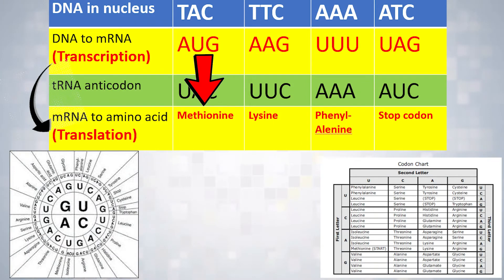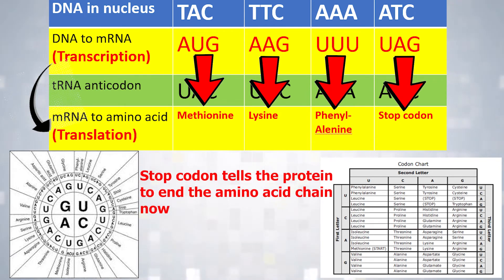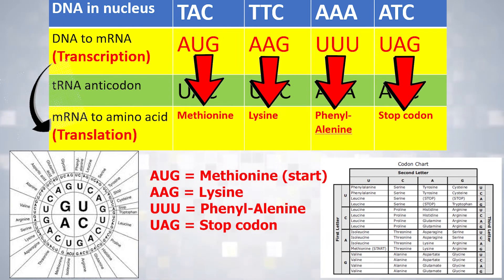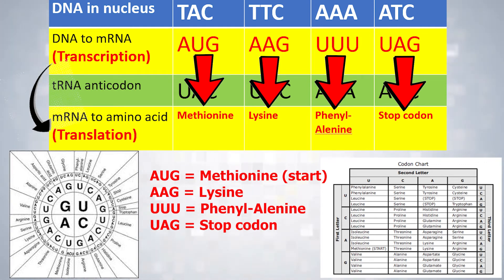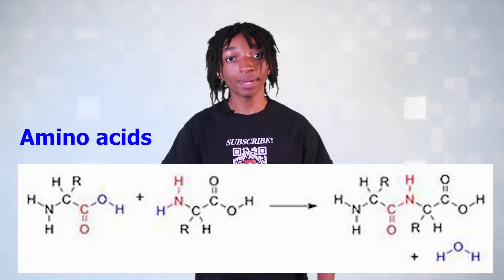Now let's find the correct amino acid for the rest of our codons. AAG would code for the amino acid lysine. UUU would code for phenylalanine. UAG would code for STOP, which tells the protein to end the amino acid chain now. So the amino acid chain for the transcribed messenger RNA message AUG, AAG, UUU, UAG would be methionine, lysine, phenylalanine, and the STOP codon. And there you have it, folks — we have a fully assembled protein, which is made by amino acids joined together by peptide bonds. Our protein synthesis journey is a huge success!